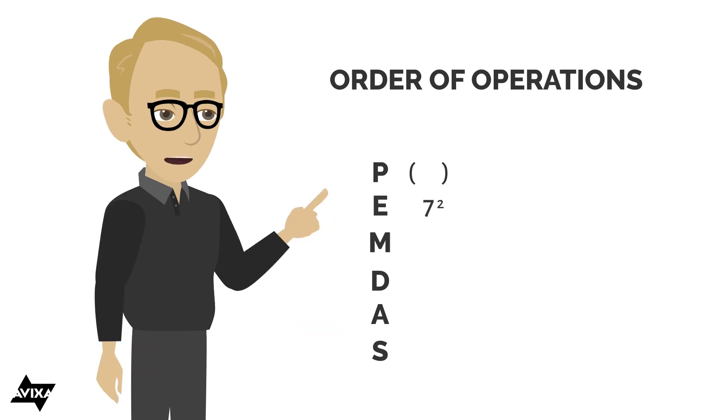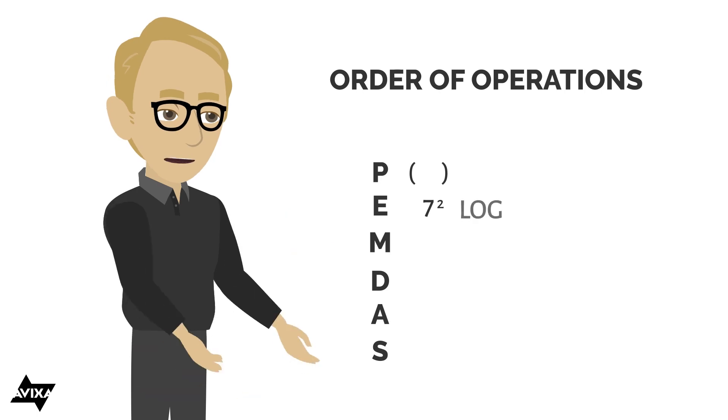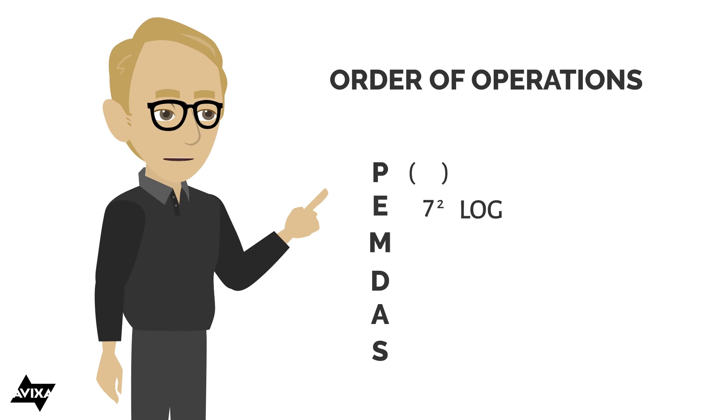Next, we're going to do any exponents or logs, like that seven squared that we saw a moment ago. The square there would be the exponent, or we may have some logarithmic functions in the equation.